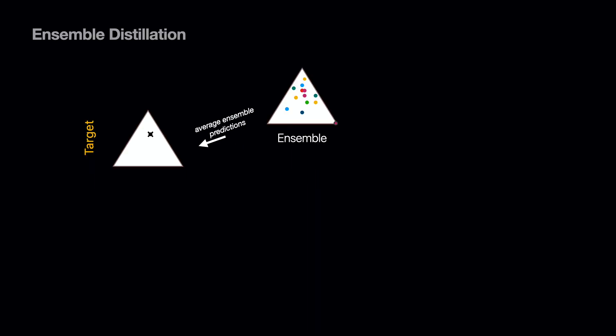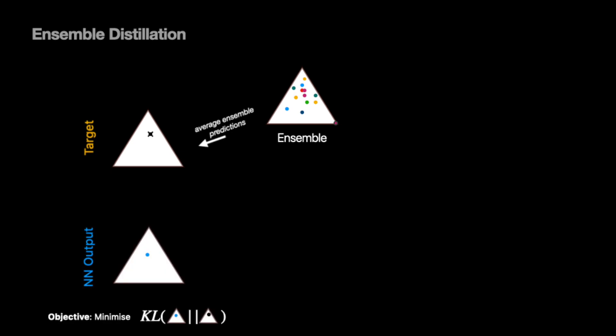So far, we described how to parameterize the Dirichlet distribution with a neural network to form a latent ensemble, and we are able to compute ensemble-like measures of uncertainty from a single neural network model. However, one question remains as to how to train such a prior network model. One approach would be to take inspiration from ensemble distillation and distill the distribution of the ensemble into a single prior network model. In standard ensemble distillation, the goal is to distill an ensemble of models into a single regular neural network in order to capture the predictive performance benefits. This is usually done by averaging the ensemble predictions and then training a regular neural network to match the mean of the ensemble.